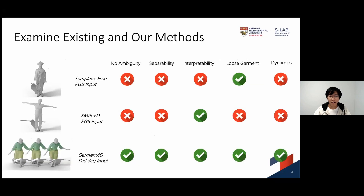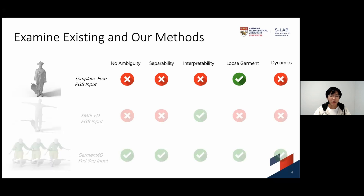With these five aspects in mind, let's examine existing solutions. Template-free methods like PyFoo take single image as input, and therefore have ambiguity and loose dynamics. The representation of reconstruction is usually implicit function, which makes it lack separability and interpretability. One advantage of template-free methods is that it is not bonded to any specific topology and therefore is capable of reconstructing any type of garments, including loose ones.